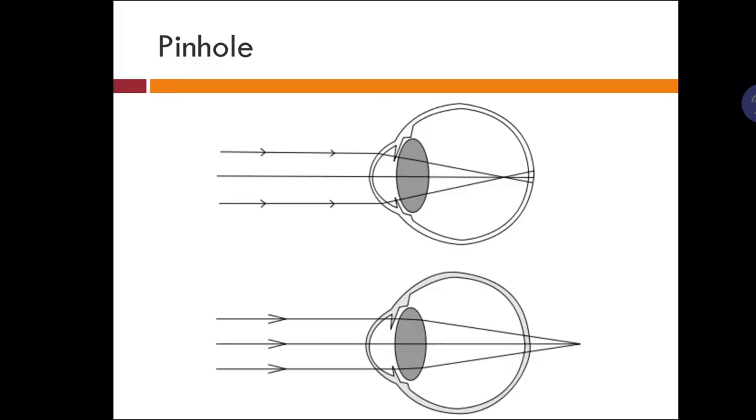In this slide we can see there are two refractive errors. In the above picture you can see this is a myopic patient because the image is formed in front of the retina, while in this picture the image is forming behind the retina. So this patient is hyperopic.